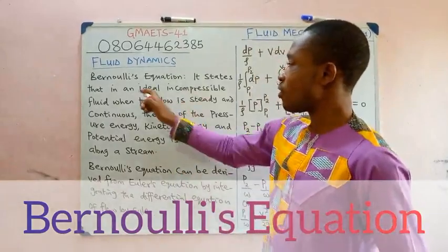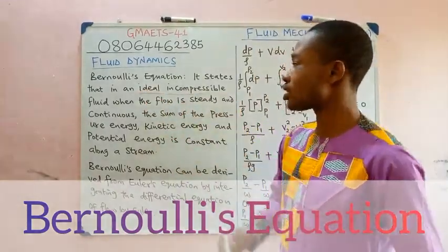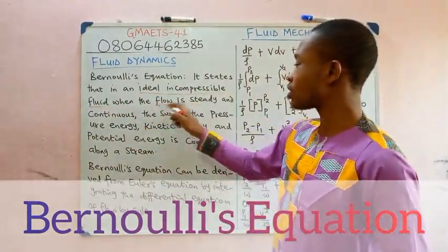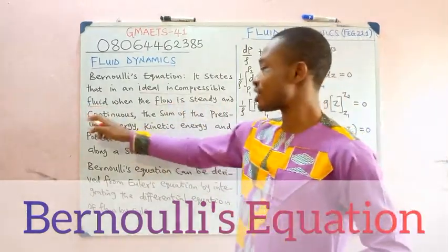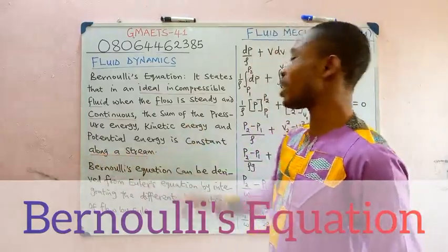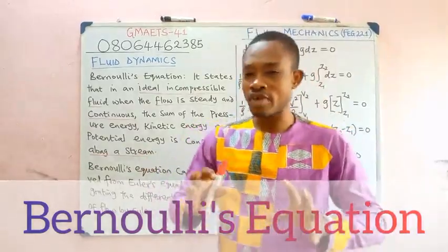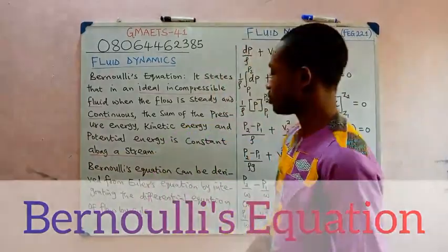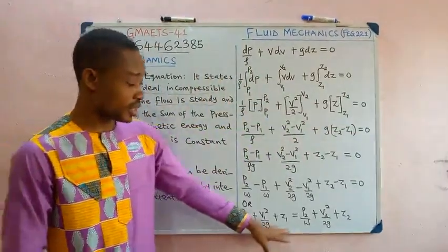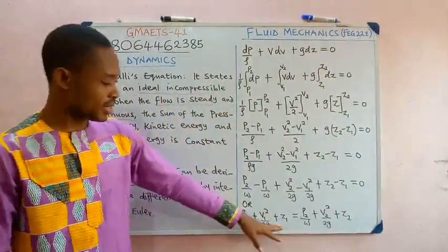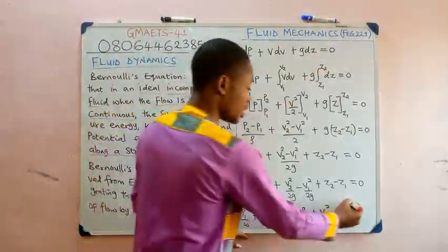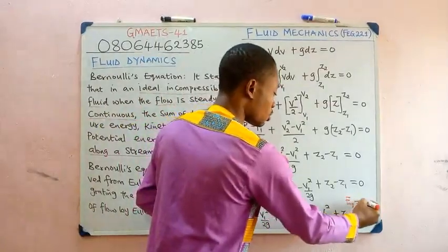Key words in Bernoulli's statement: the fluid must be ideal and incompressible; the flow should be steady and continuous; and the flow should be along a streamline. When the sum of all these energies equals a constant, the initial sum of energy equals the final sum — E1 = E2.